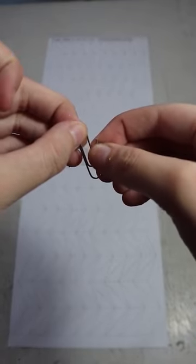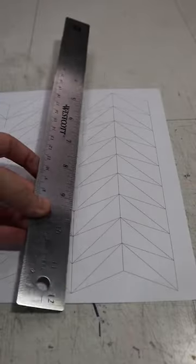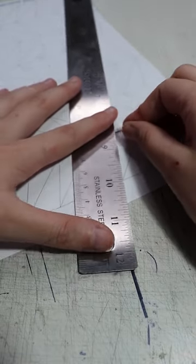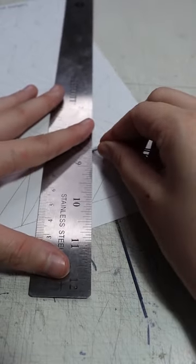Now Jeremy has his own way of precreasing this model, but I like to start by scoring with a paperclip. And though it's a really tedious process, that's going to weaken the paper so that all your folds just snap into place.